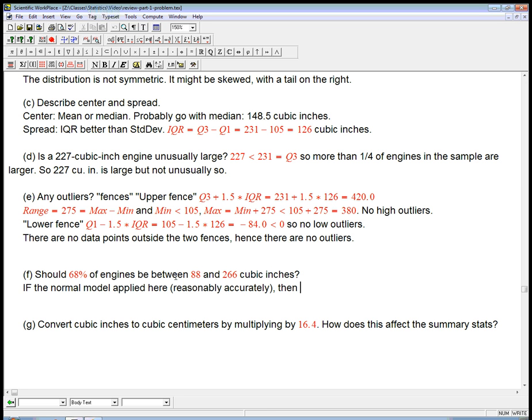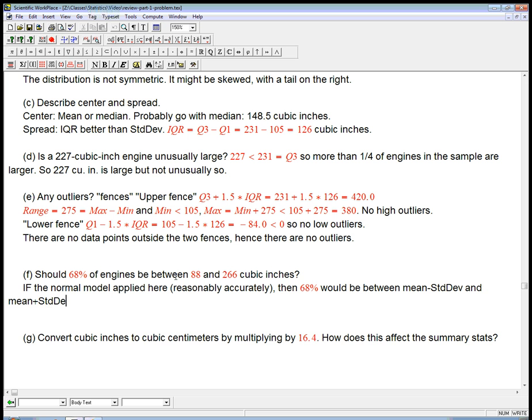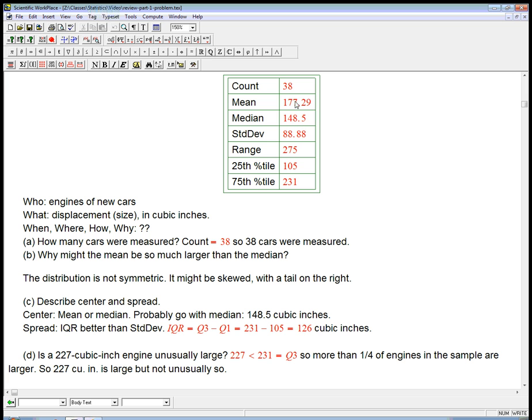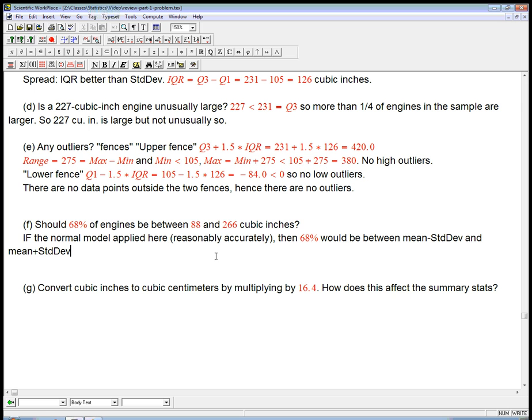What does that rule say? It says 68% would be between the mean minus one standard deviation and the mean plus one standard deviation. And if you look at the numbers, 177 minus about 89 and 177 plus 89, that's where they get the 88 and the 266. But we know this can't be normal. Think about it for a second. To be normal, you definitely have to be symmetric and unimodal. It's not even symmetric.